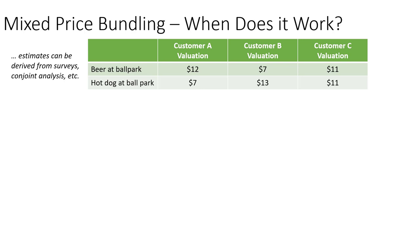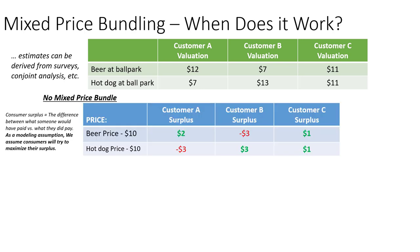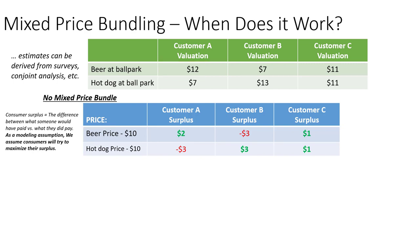For the moment, let's imagine that marginal costs of selling products are equal or trivial. We have three different customers and we know how much they value two different options sold at a baseball game: a beer and a hot dog. Customer A values the beer at $12 and the hot dog at $7. Customer B flips — the beer is worth only $7 and the hot dog is worth $13. Customer C values both quite high. If we use a la carte pricing and set the price at $10, we can calculate consumer surplus and infer what each customer will do. Customer A buys the beer (surplus of $2) but not the hot dog. Customer B does the opposite. Customer C buys both. In total, we make $40 in revenue — two beers and two hot dogs sold.